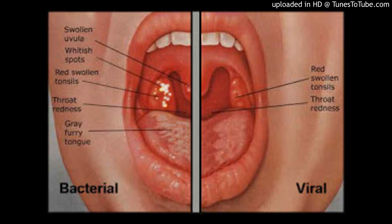Abstract Background: Measles is the leading killer among vaccine-preventable diseases. It is responsible for an estimated 44% of the 1.7 million vaccine-preventable deaths among children annually. Objectives: To assess the effects of antibiotics given to children with measles to prevent complications and reduce pneumonia, other morbidities, and mortality.